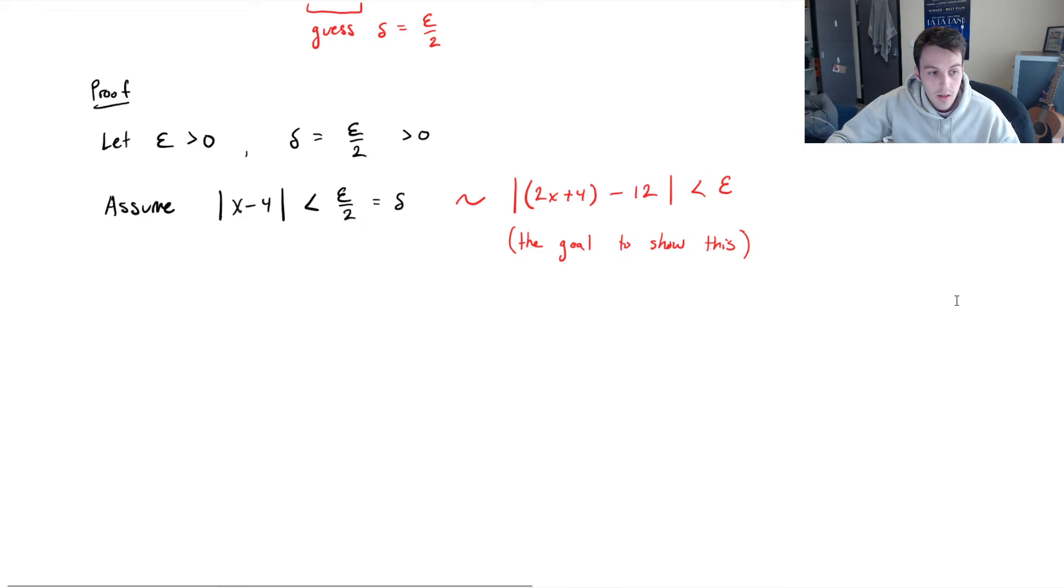So, almost there. So what is 2x plus 4 minus 12? This is just like a new line. Absolute value of the function minus 12 is equal to, well, we've already kind of done this, right? Remember, this is just 4 minus 12. This is 2x minus 8. And factor out the 2. 2 times absolute value of x minus 4.